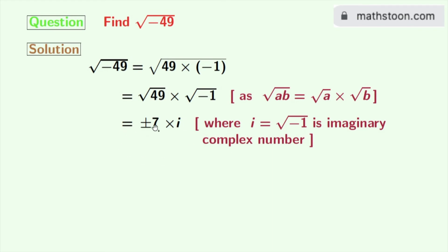After multiplying these two we get plus minus 7i. So finally we get square root of minus 49 is equal to either 7i or minus 7i.